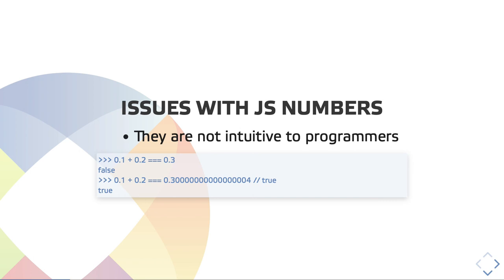And if you go a little bit further and try to write 0.1 plus 0.2 equals equals equals 0.30000000000000004 — a number quite close to 0.3 — it returns true. So, what's going on there? This is quite surprising if you don't know binary float numbers. And I think this is the major problem of numbers in JavaScript right now.